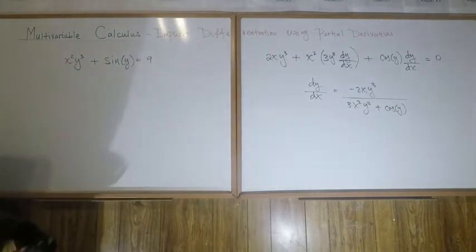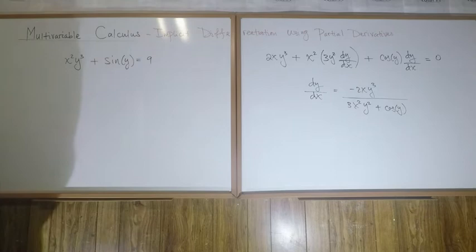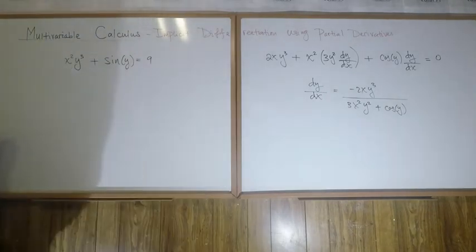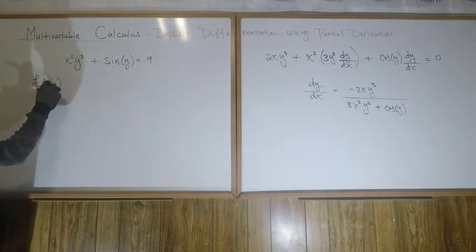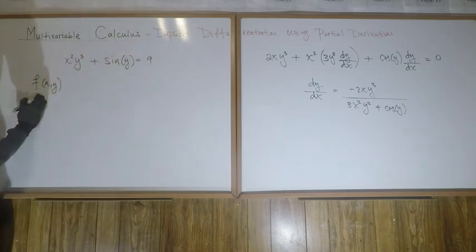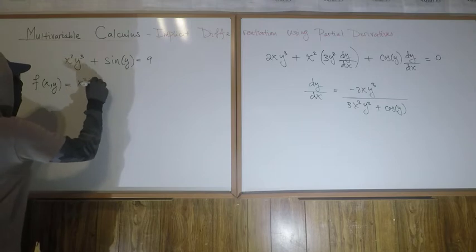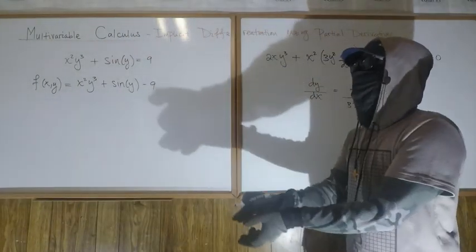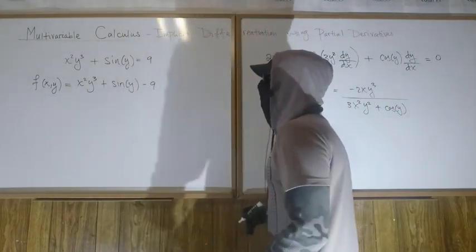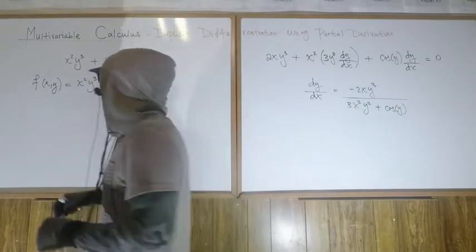How do we do this using multivariable calculus? Let's first define this as a function of x,y by calling f(x,y) equal to x²y³ plus sine of y minus 9. So in practice what you do is get everything to one side on your implicitly defined curve and then call it f of x comma y. So now it is a multivariable function, function of two variables x and y.